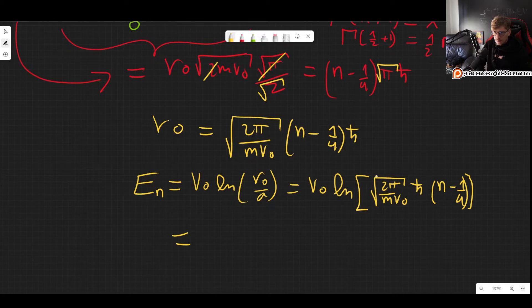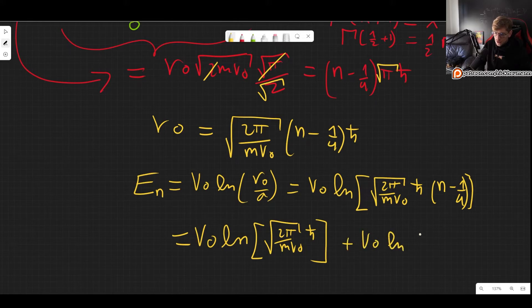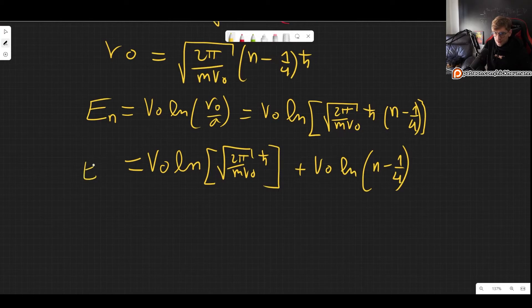But it is useful to write this a little bit differently. So since all of these things are multiplying we can separate this into two different logs. So we can get the logarithm of the constants, so 2 pi m V0 h bar squared over A squared, and then we can write plus V0 times the natural log of this n minus one fourth.